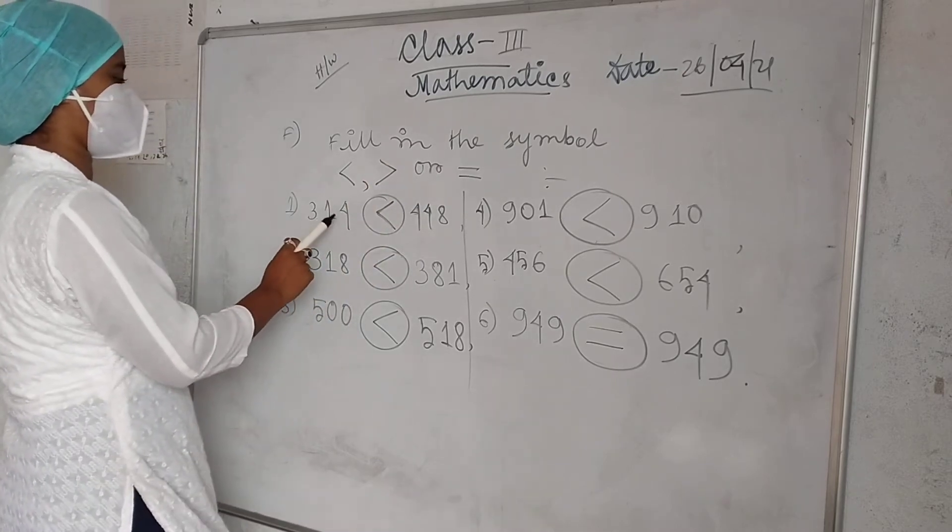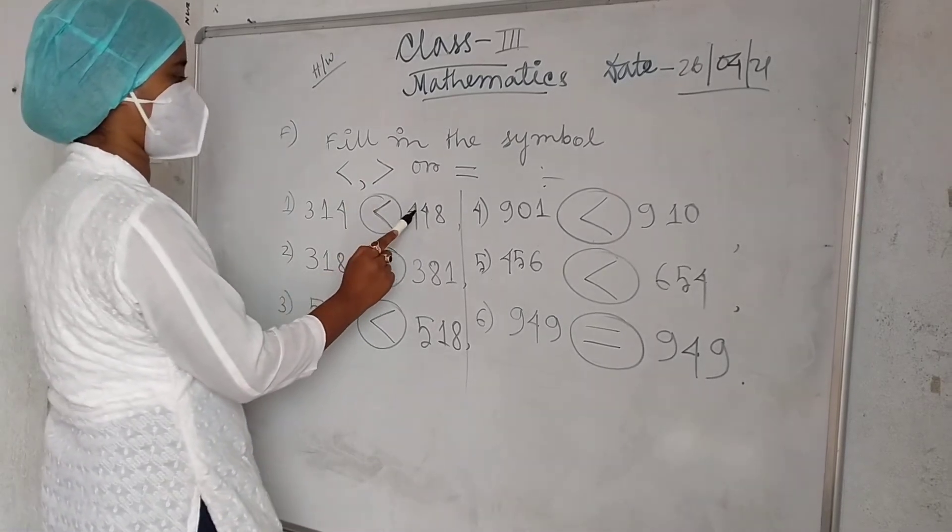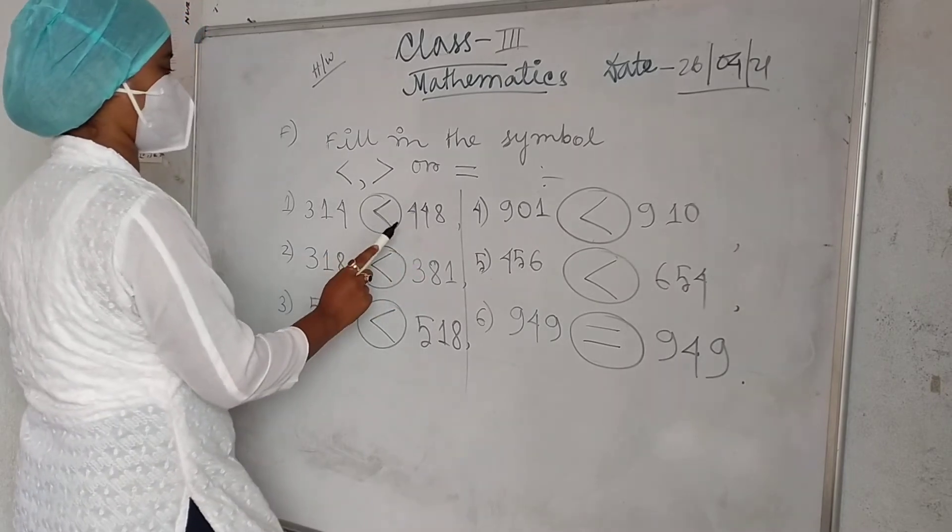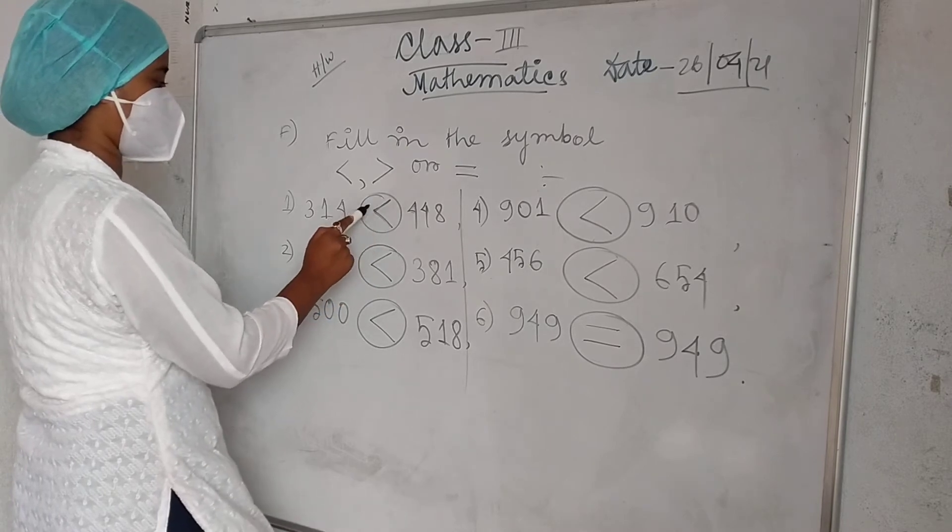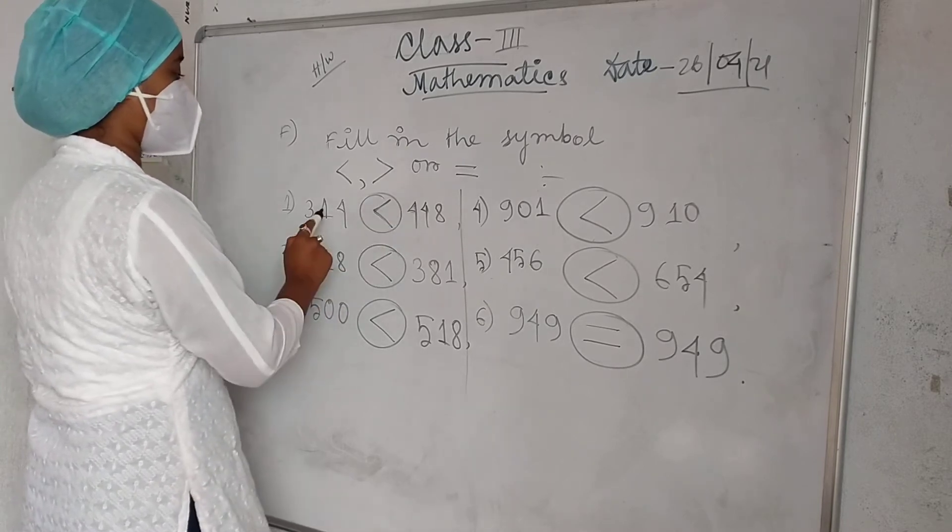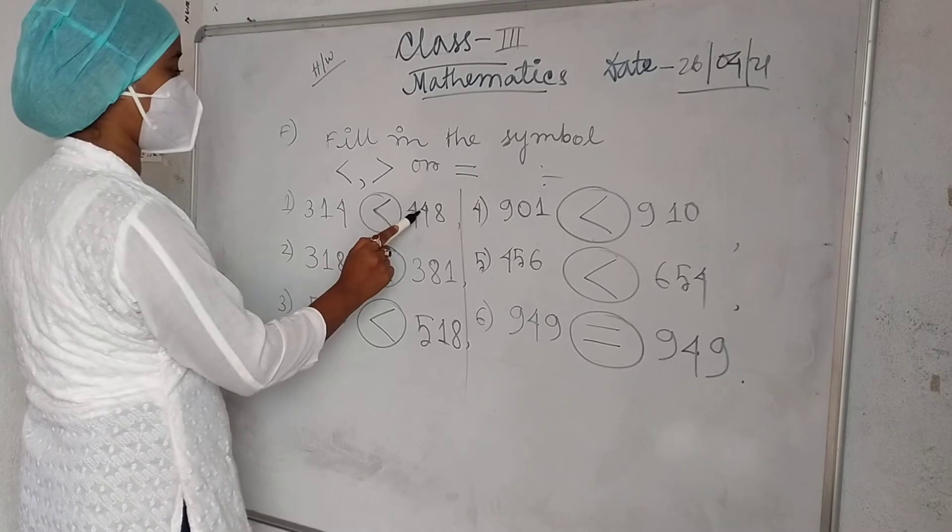First number is 314 and that is 448. So what about it? 448. It is less than. 314 less than 448.